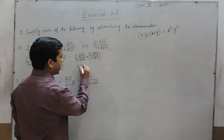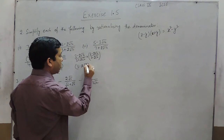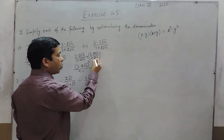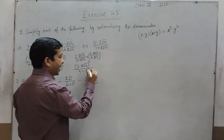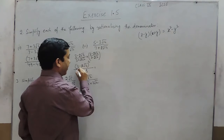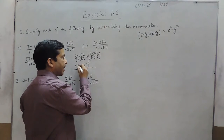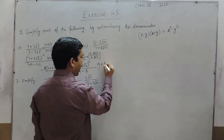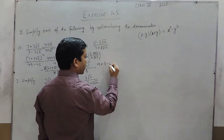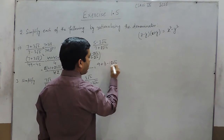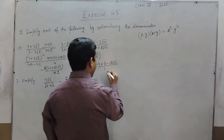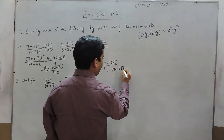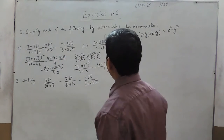When we solve it, the numerator is (3 minus 2 root 2) whole square, and the denominator is 3 into 3, which is 9, minus 2 root 2 multiplied by 2 root 2, which is 8. Opening the bracket, (x minus y) squared equals x squared plus y squared minus 2xy, giving 17 minus 12 root 2 upon 1. So the correct answer for the second part is 17 minus 12 root 2.